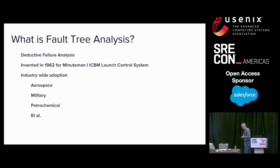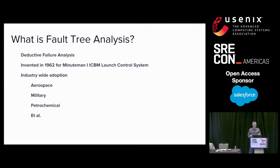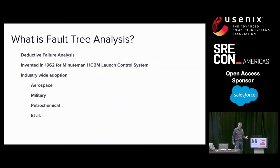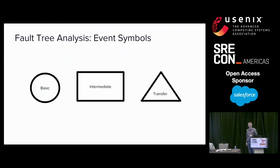Engineers at Boeing wanted to have a framework to do a couple of things. First, they wanted to have a way to list out all the potential failure modes or failure inputs into their systems. Second, they wanted a way to quantify which of these failure modes and inputs they should prioritize and shore up in order to make their system reliable. The technique was very successful and has since been adopted by the aerospace, military, petrochemical, pharmaceutical, and many other industries.